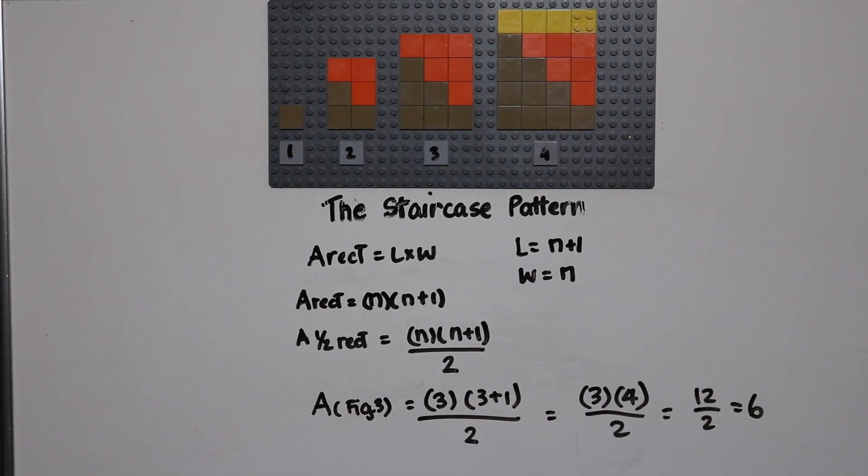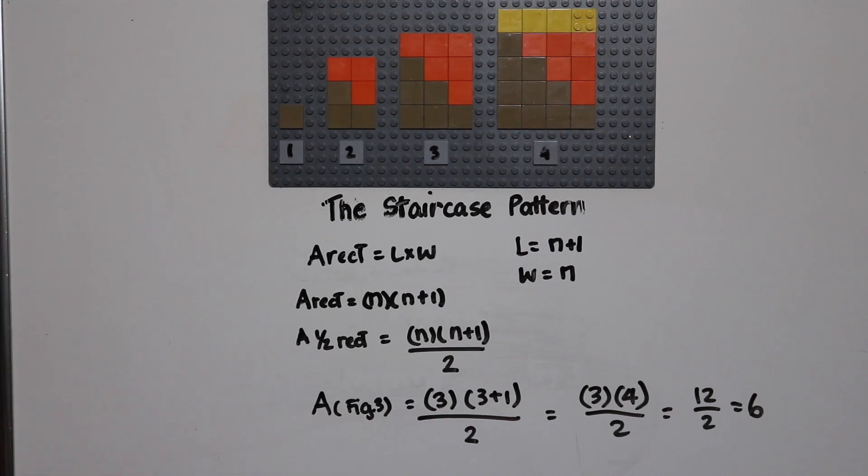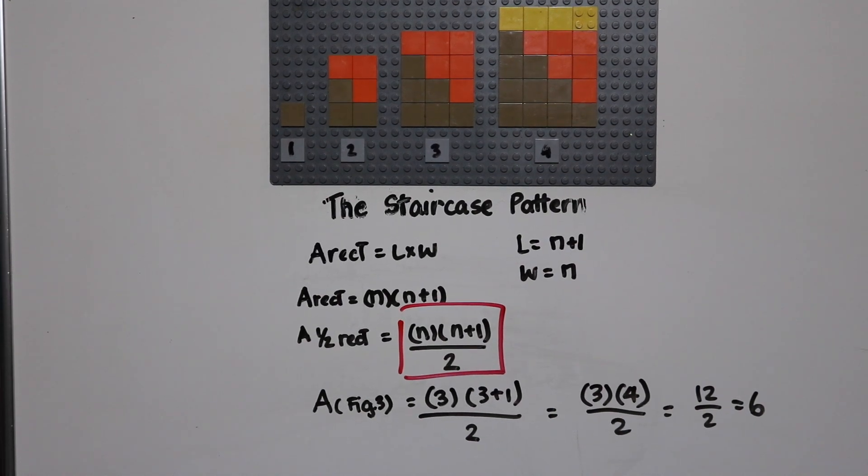And there you go. So the pattern rule for this pattern would be n times n plus one divided by two. Thanks for watching.